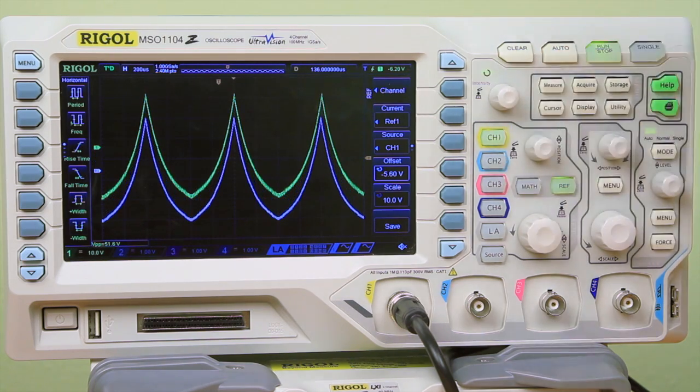So by doing this we're easily able to capture a problematic signal and save it on the oscilloscope. Then with the waveform generator we can capture the signal from the oscilloscope, transfer it and reproduce it, allowing for easier testing in a lab environment instead of out in the field.